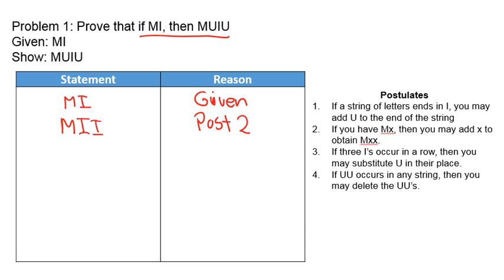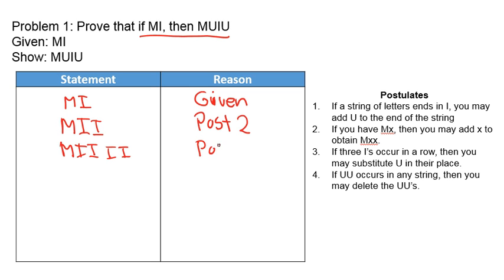Now we know MII is true. Which postulates apply? Postulate one could apply — we could add a U to the end. Postulate two can always apply to any string. Postulates three and four do not apply. I'll apply postulate two again: since MII is true, we can say MIIII is true by postulate two.